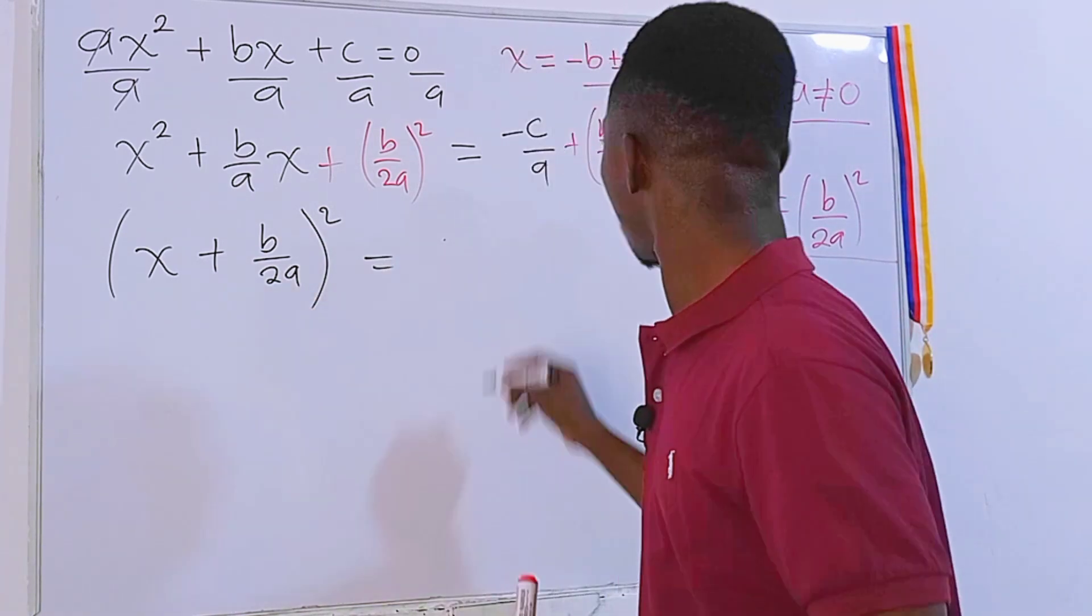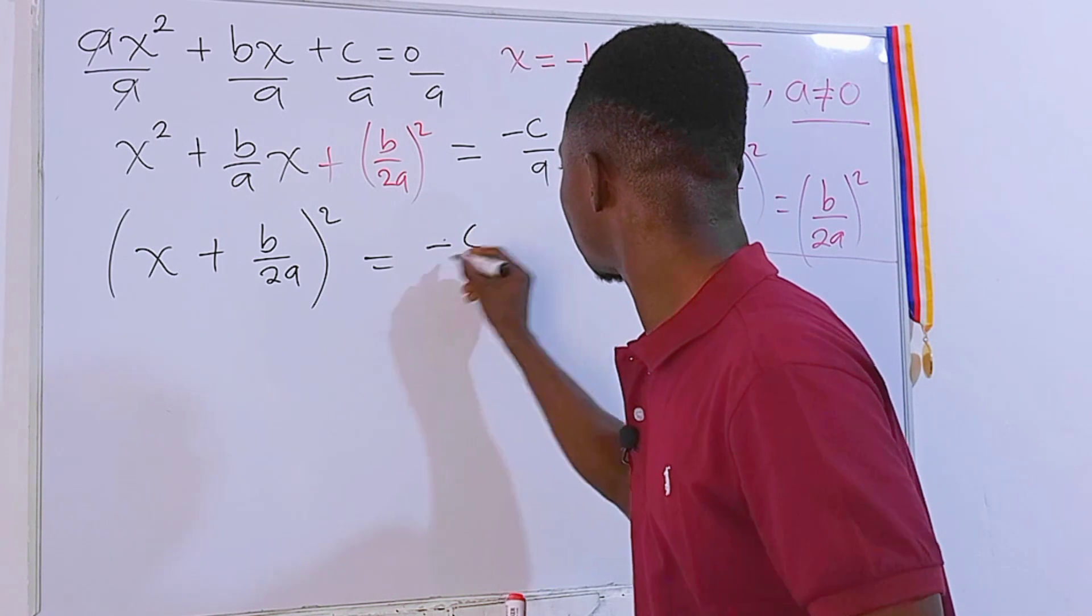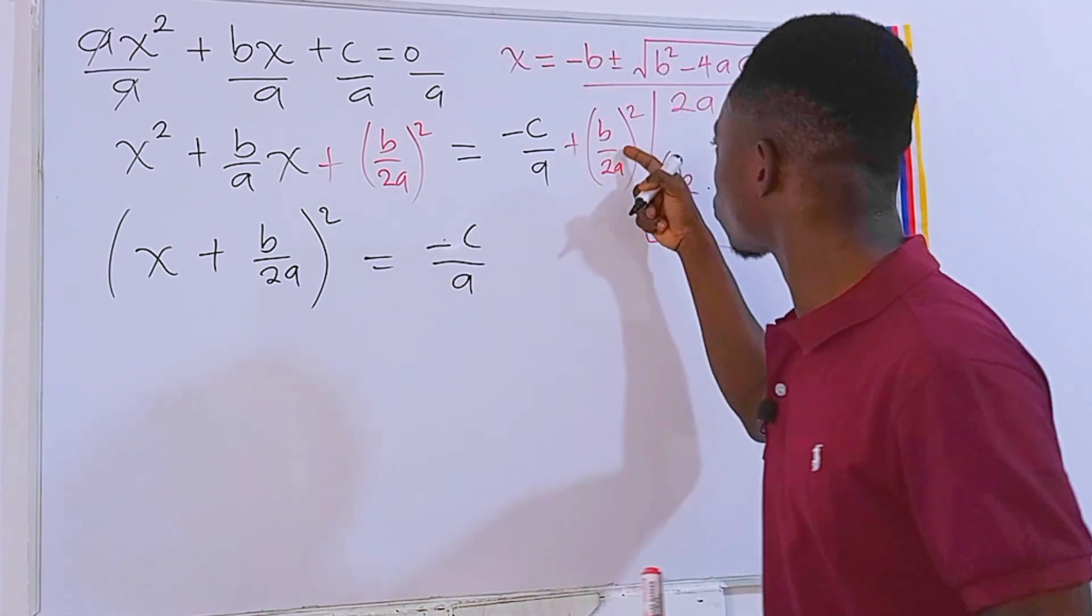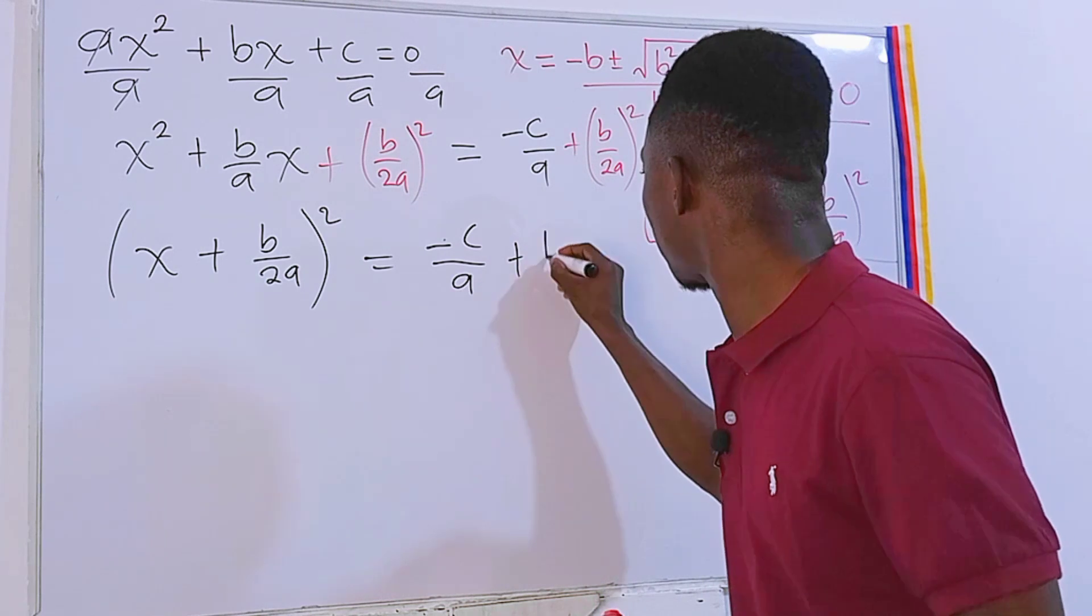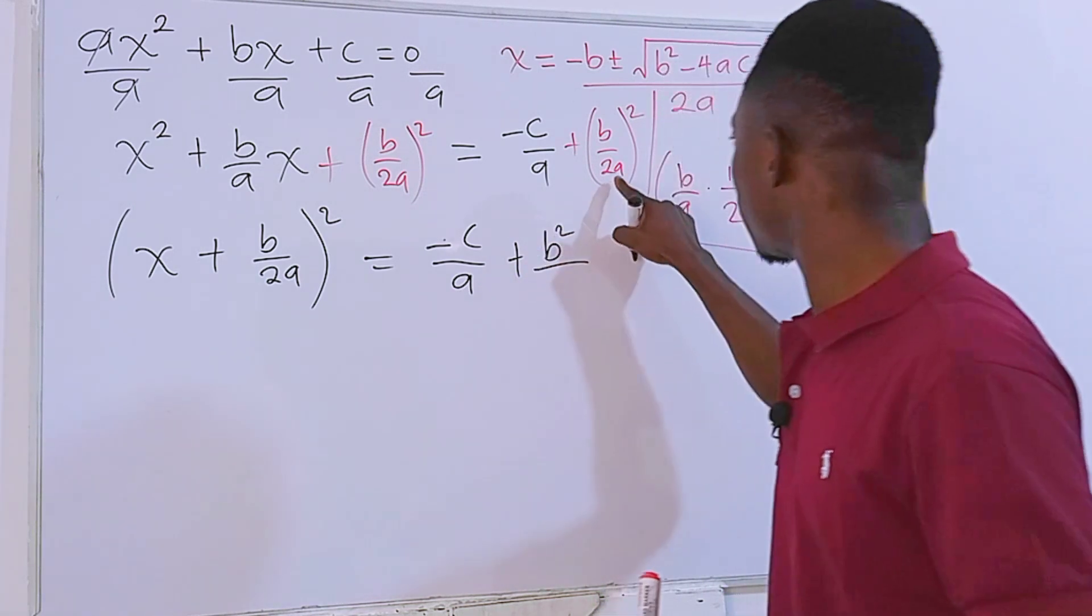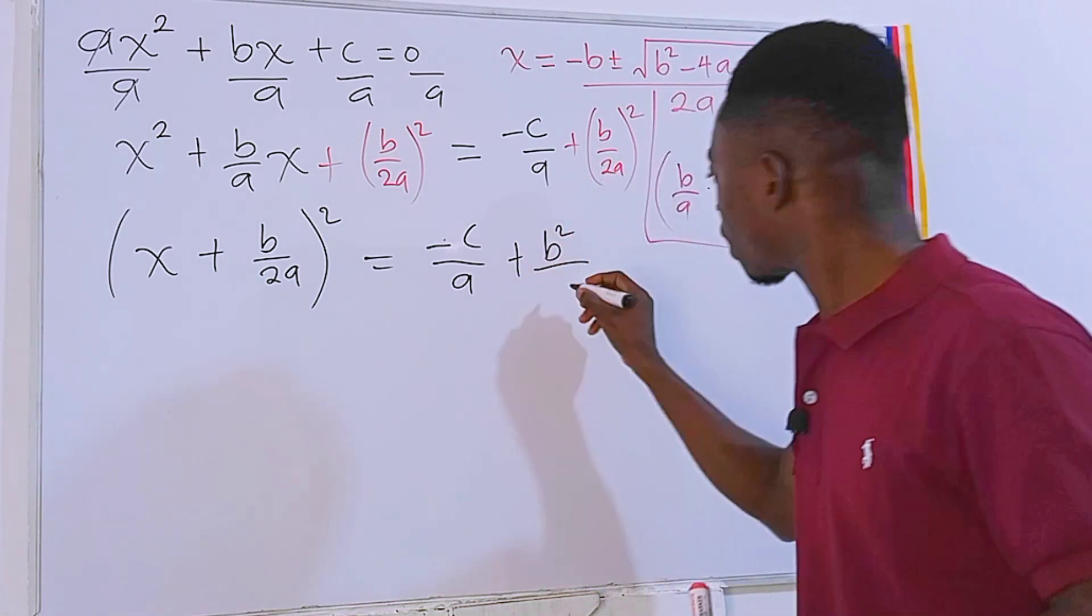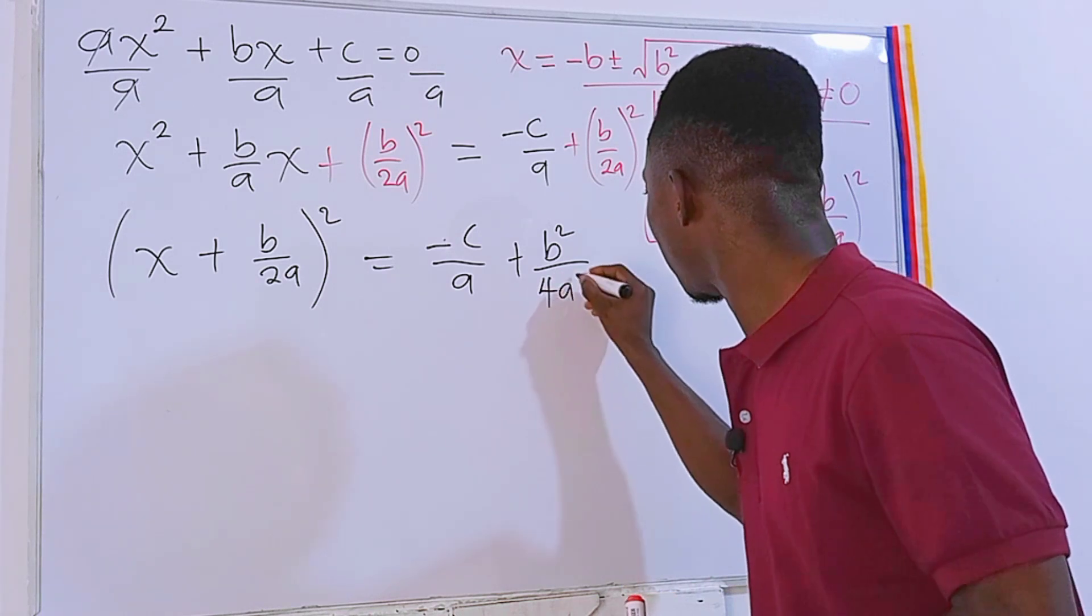And this will be equal to, I will just write this, negative c over a. Then try to simplify this. Plus b squared is still b squared divided by 2a squared. That will be 4a squared.